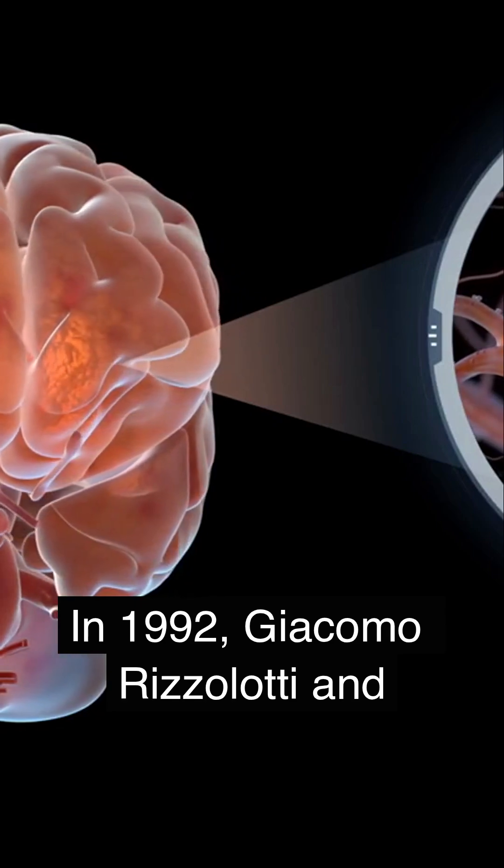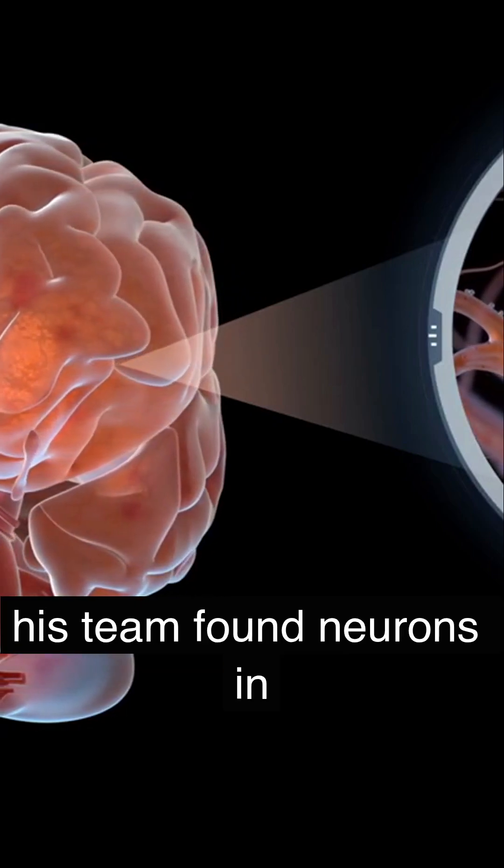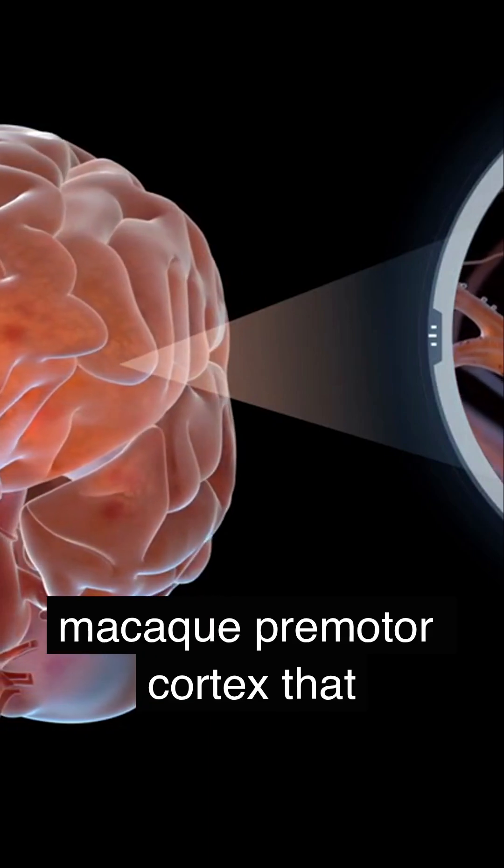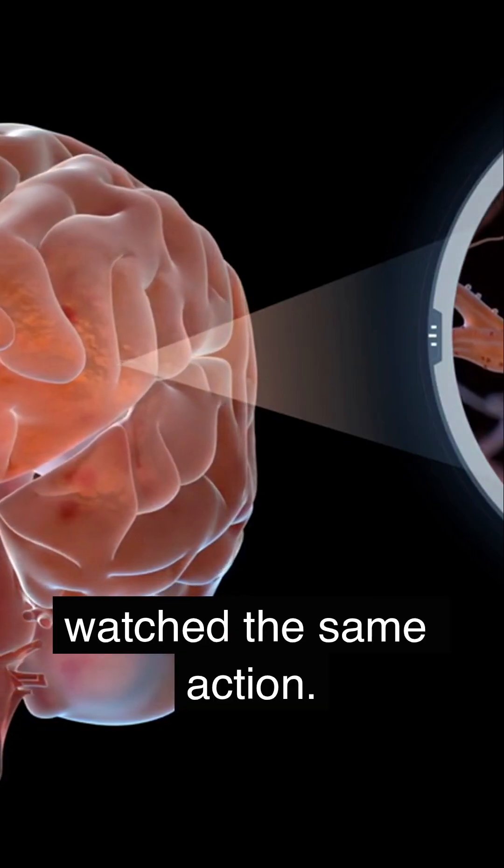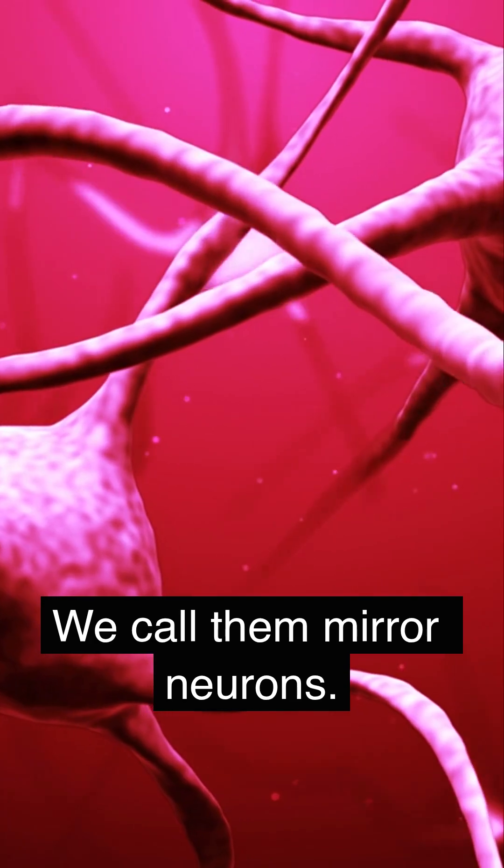In 1992, Giacomo Rizzolatti and his team found neurons in macaque premotor cortex that fired both when the monkey acted and when it watched the same action. We call them mirror neurons.